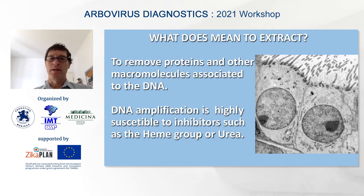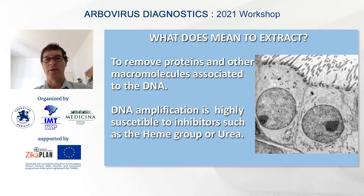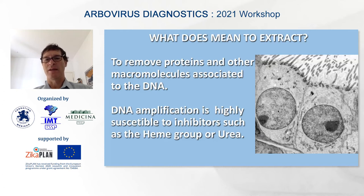Extraction also removes many substances that may act as inhibitors of the Taq polymerase or reverse transcriptase if you are doing RT-PCR. One well-recognized inhibitor is the heme group present in hemoglobin. If you want to do PCR from blood, you always have to remove the red cells and as much hemoglobin as possible. Urea is another strong inhibitor, so urine is not a very good fluid for PCR. Removing the inhibitors and removing whatever is physically bound to the DNA are the main reasons we do extraction.